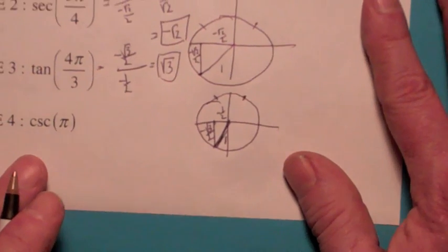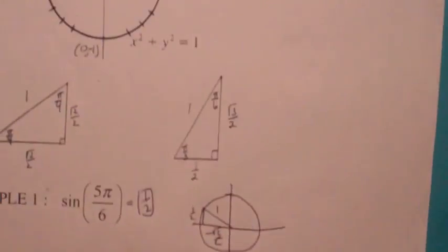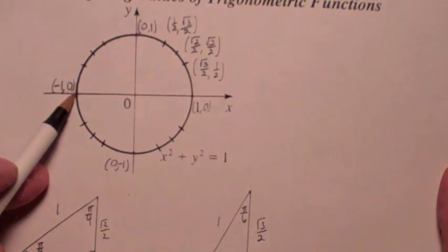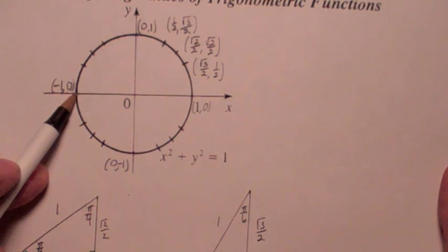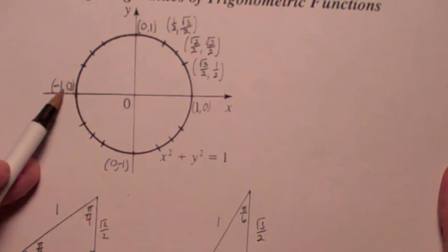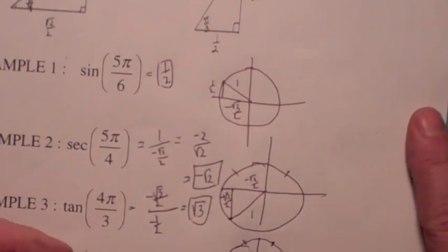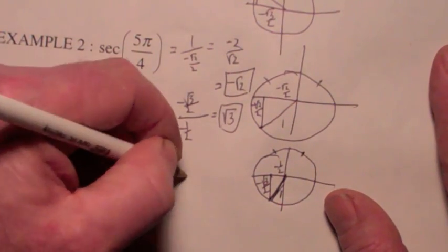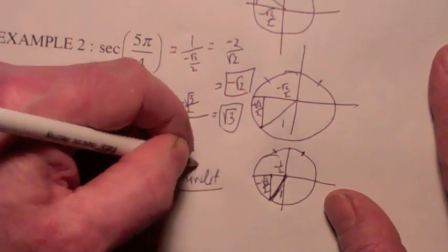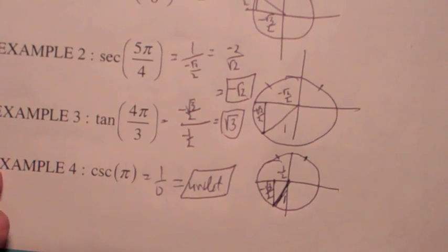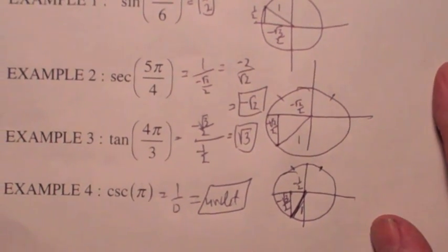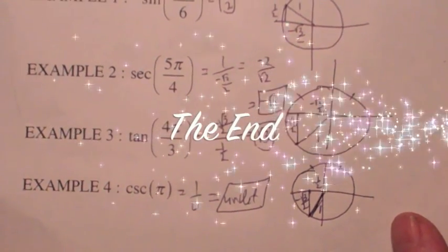The cosecant of pi — that's a quadrantal angle. Pi is over here; the cosecant is 1 over the sine, so it's 1 over 0, which is undefined. I hope that helps. Those are three important things you should know from trig, though there's a lot more as well. Thank you.